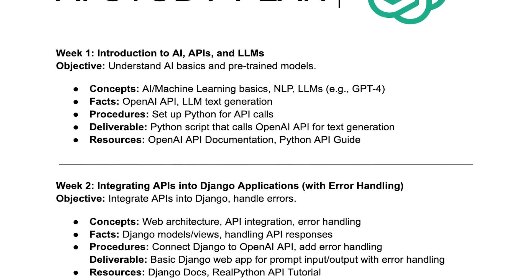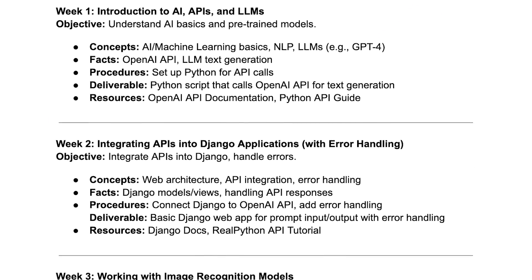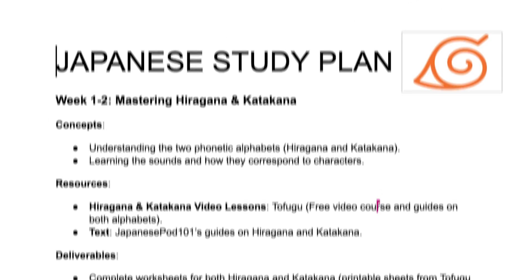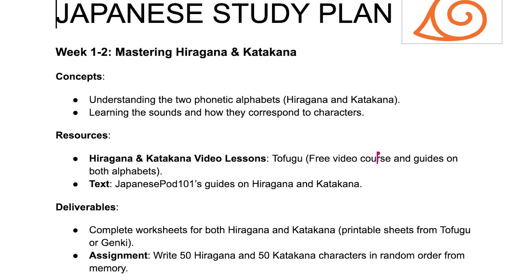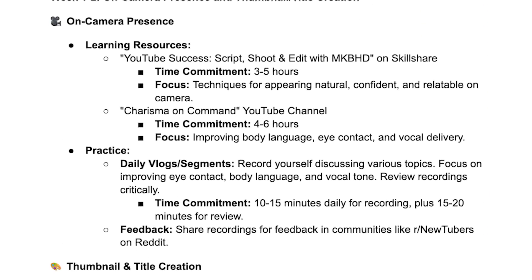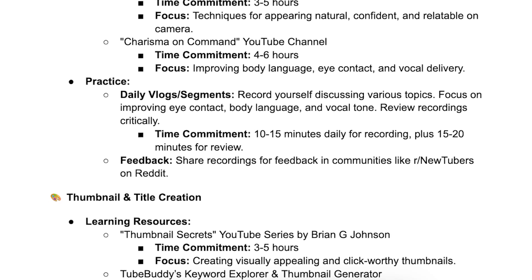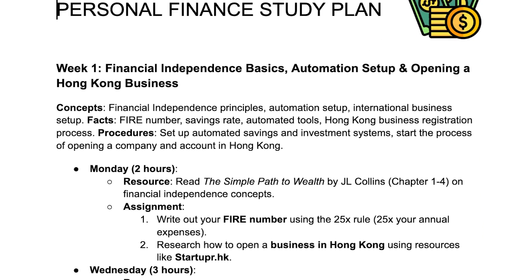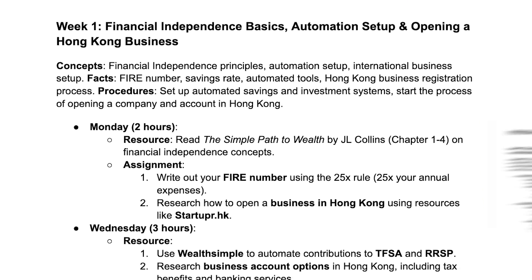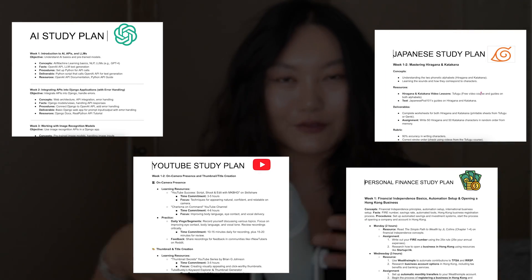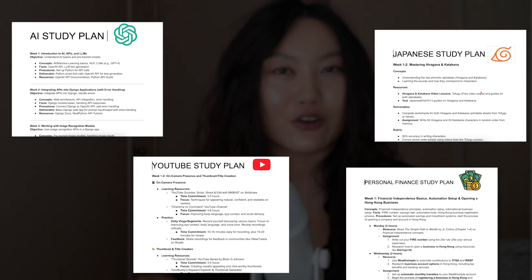This is my self-study plan to learn AI which I made using ChatGPT. This one is for learning Japanese. This one is for learning how to make better YouTube videos. And last but not least, this one is for learning personal finances. These are the four topics, the four study plans that I'm currently following.